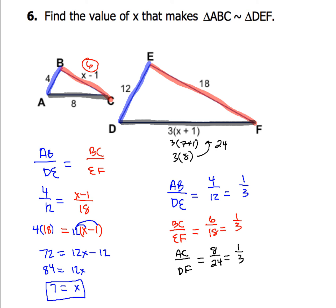Double-check to make sure all three ratios reduce to the same value. In this case they do — all equal 1/3 — so X = 7 is correct and our two triangles are similar. If any ratio had come out differently, our triangles would not be similar.